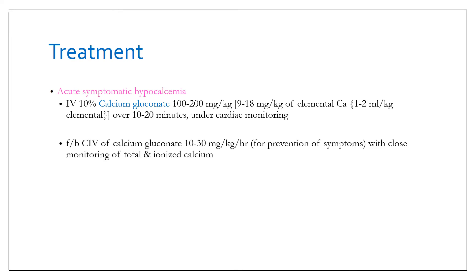Followed by this, you have to give calcium gluconate 10 to 30 mg per kg per hour for prevention of symptoms, with close monitoring of total and ionized calcium to be discontinued when they become normal. The entire infusion and bolus dose should be given very slowly, not more than 1 to 3 ml per minute to avoid hypotension, bradycardia, and other kinds of cardiac dysrhythmias.